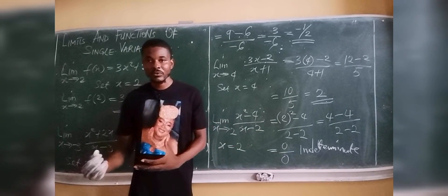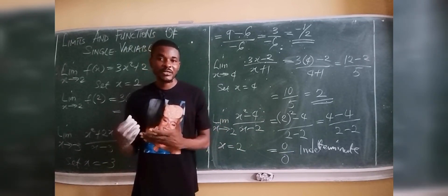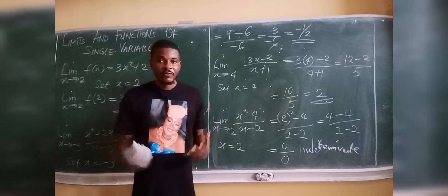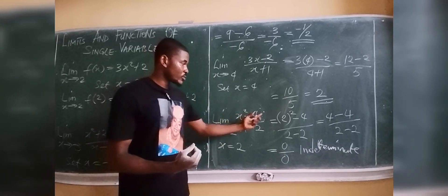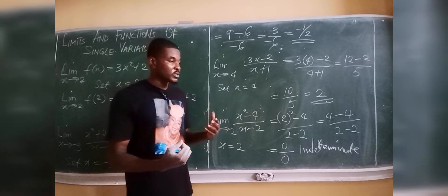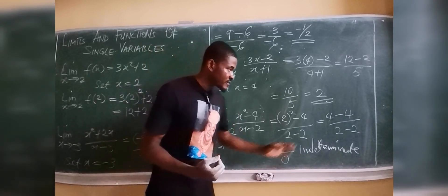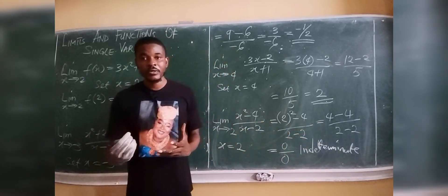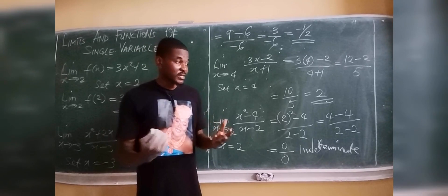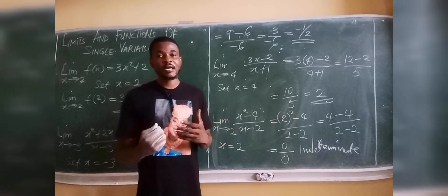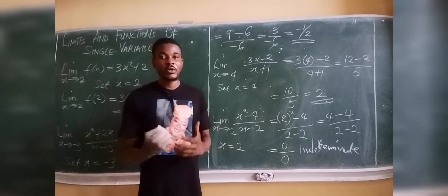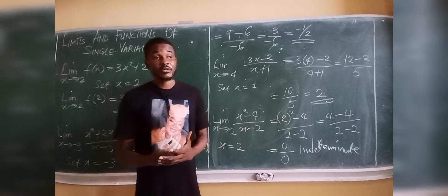When the limit fails by substitution, you check the alternate methods. The first alternate method is factorization. Since x² − 4 is a quadratic expression, it can be factorized. We don't want zero divided by zero — that's indeterminate — so we must employ the next method: factorization, the conjugate, or L'Hôpital's rule.